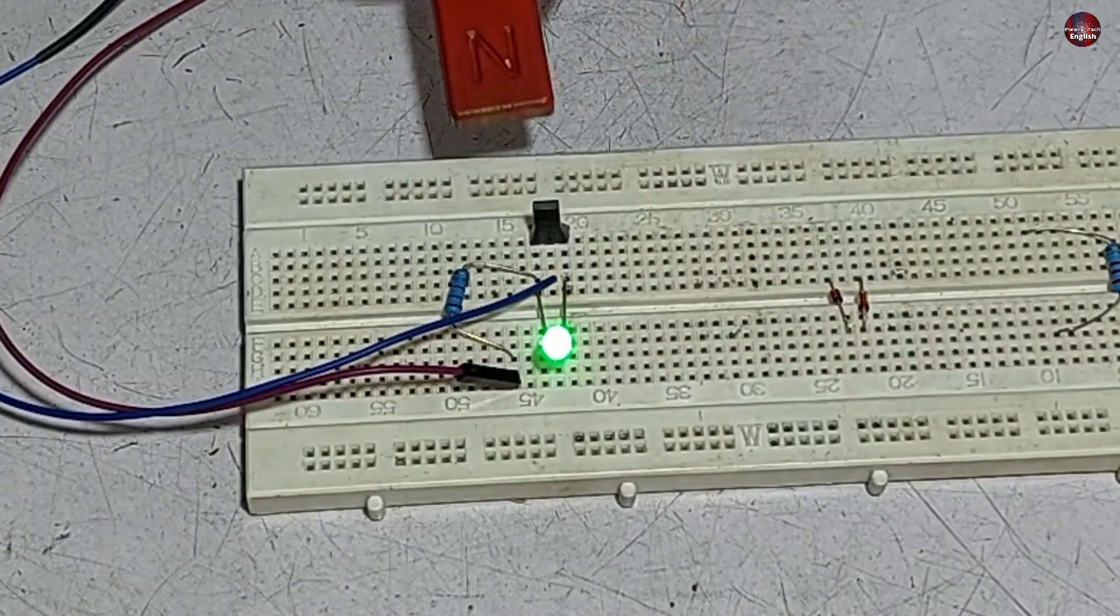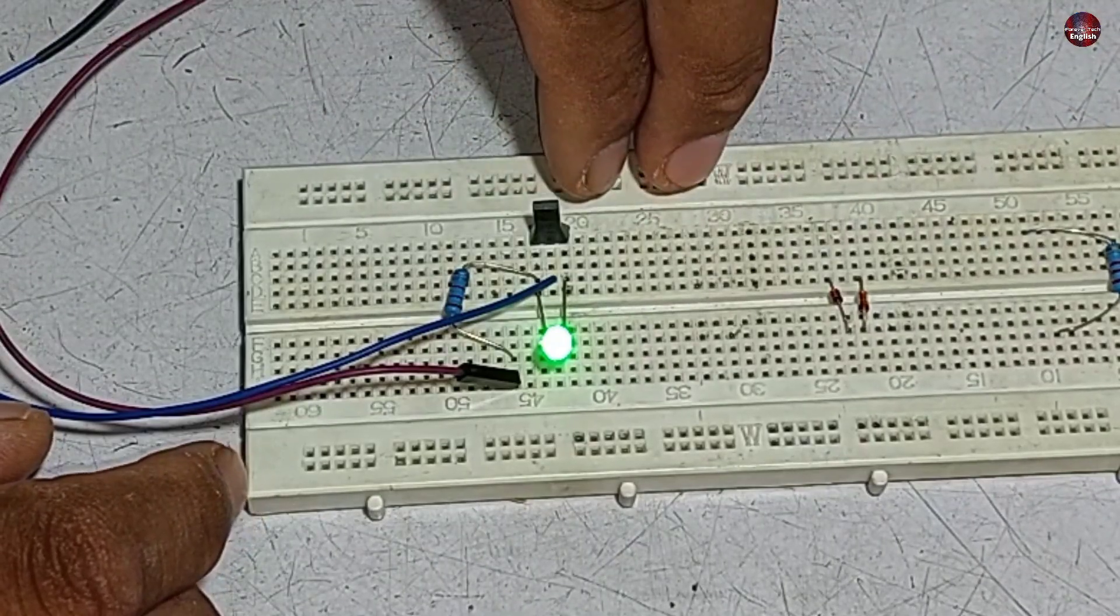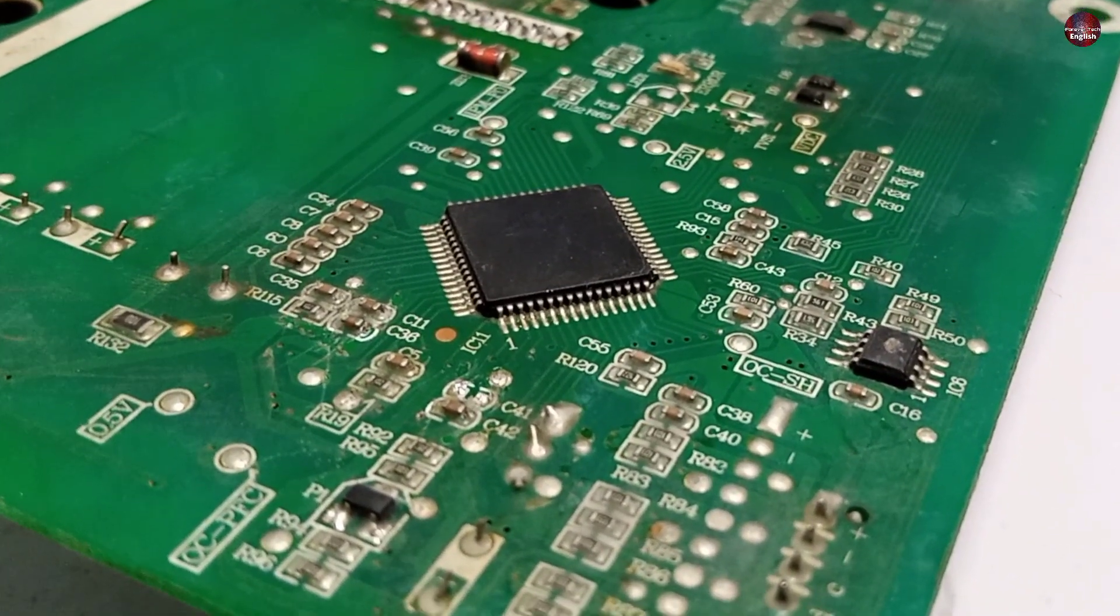And then, further, in the PCB, it is converted to digital output. Then it tells the microcontroller the motor's position and at what speed it works.